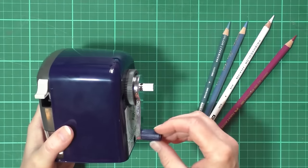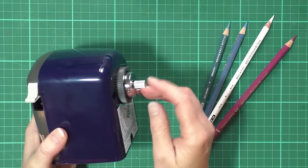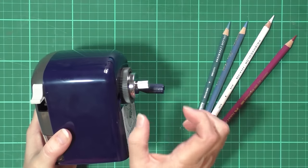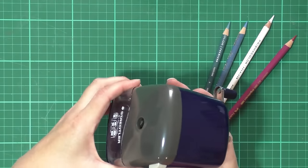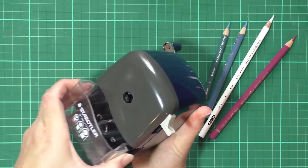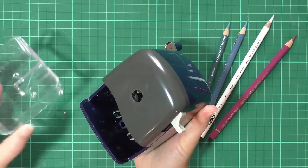It comes with a turn handle and an adjustable little screw here which will change the length of the pencil to sharpen. It has a little catch tray here to catch the shavings.